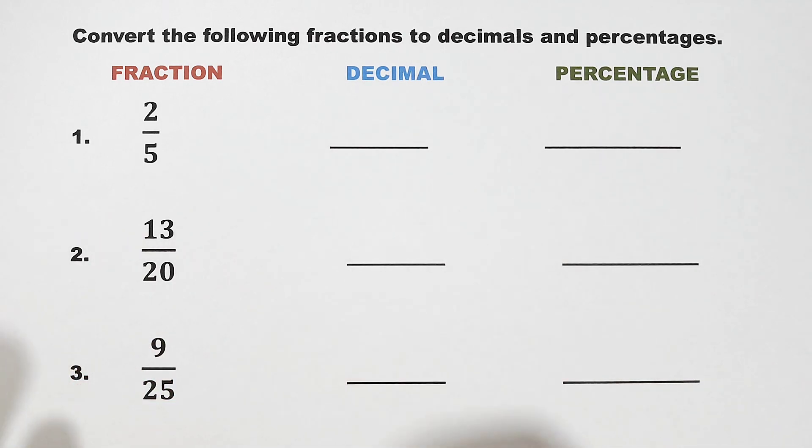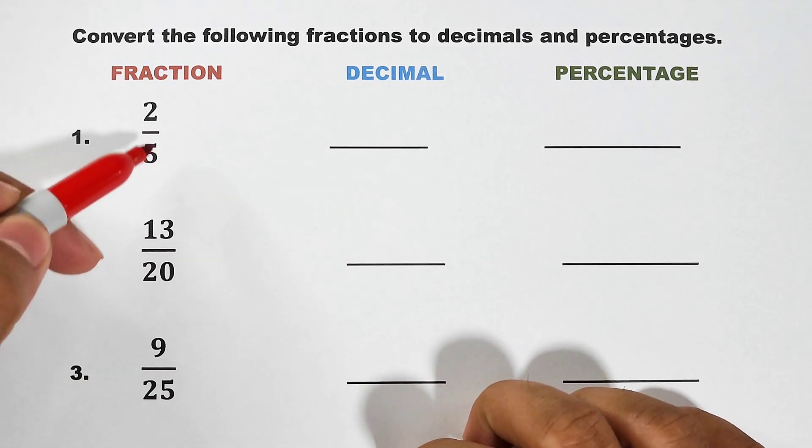I'll show you a shortcut on how to convert these fractions to decimals and percentages. Let's start with number 1. In number 1, as you can see, we have 2 over 5.